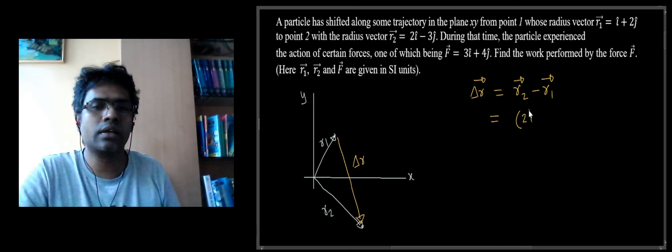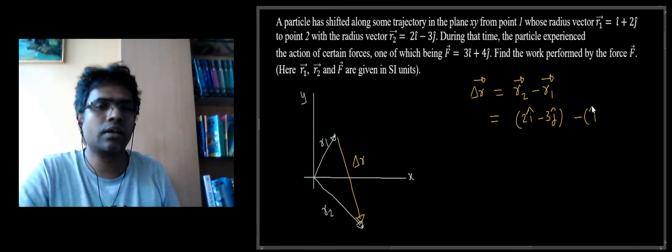So delta r is r2 minus r1. r2 is given as 2i minus 3j, r1 is i plus 2j, so this is i minus 5j.